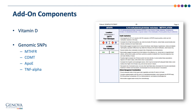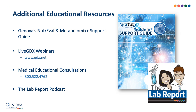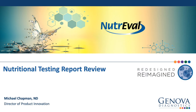There are a couple of add-on options for the NutriVal profile, including a vitamin D assessment and certain genomic SNPs. The genomic SNPs can be added on individually and include MTHFR, COMT, APOE, and TNF-alpha. For a greater dive into the clinical utility of these products, additional resources are available, including a fully-referenced comprehensive NutriVal and Metabolomics Plus support guide detailing every function and analyte on the report, LiveGDX webinars at www.gdx.net, one-on-one educational consults at 1-800-522-4762, and the lab report podcast exploring the latest information in integrative and functional medicine. This concludes the report review video for our nutritional products, including the NutriVal, Metabolomics Plus, and all related nutritional subpanels such as organic acids, amino acids, and essential and metabolic fatty acids.